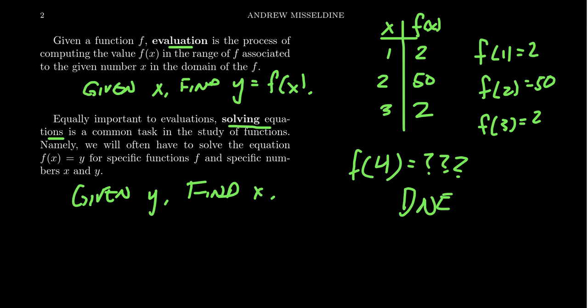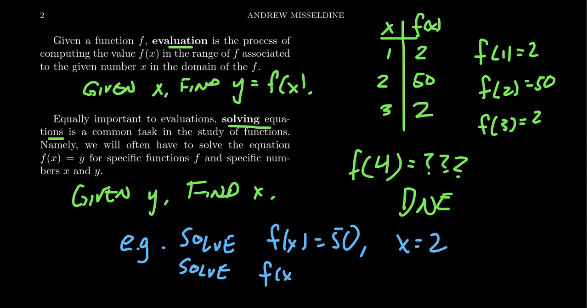On the other hand, we're often tasked with solving equations. When you do evaluations, you're given the x value, you're asked to find the y value, which is the f of x value. When you're solving an equation, you're actually going to be given the y coordinate, and then you're supposed to find the x coordinate. For example, we could ask something like solve the equation f of x equals 50. Did you ever hit the bullseye? In which case, the solution would be x equals 2. When x equals 2, we got a bullseye with our arrow example.